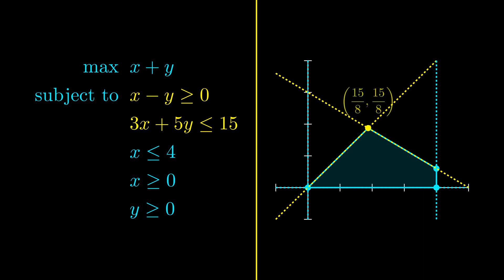For example, the first two constraints, shown in yellow on the left, are tight at the vertex 15 eighths, 15 eighths. Each of the other vertices are also tight at at least two constraints.